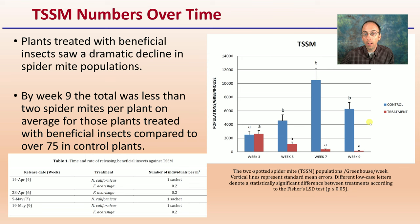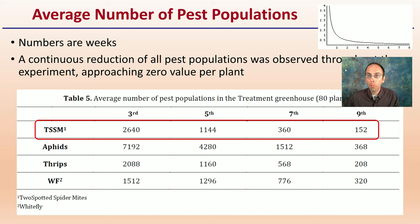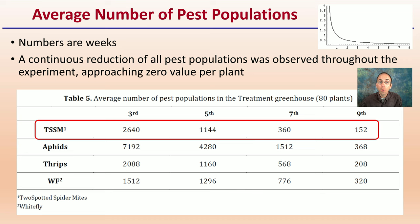The average number of pest populations shows how they were reduced over time, with a continuous reduction in all pest populations observed throughout the experiment, approaching zero per plant. This confirms that beneficial insects are definitely worth the time and effort to apply.